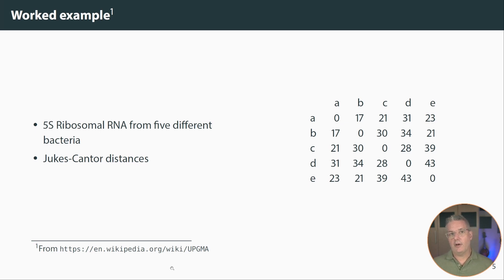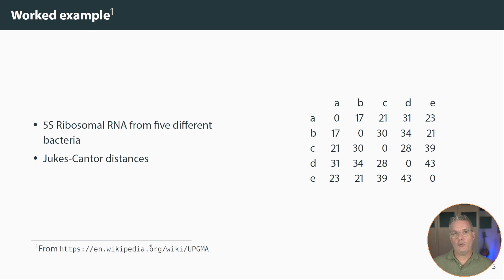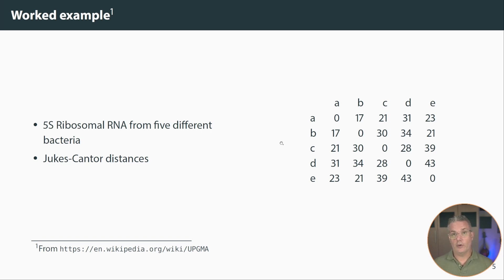Let's go through an example using 5S ribosomal RNAs. There are five sequences that have been put into a multiple sequence alignment, and the Jukes-Cantor distances between all pairs have been calculated, giving us this distance matrix. I took this example from Wikipedia, but any small example would do — you can also follow it there. We can see immediately that the smallest entry is 17, between A and B, so we're going to combine A and B.